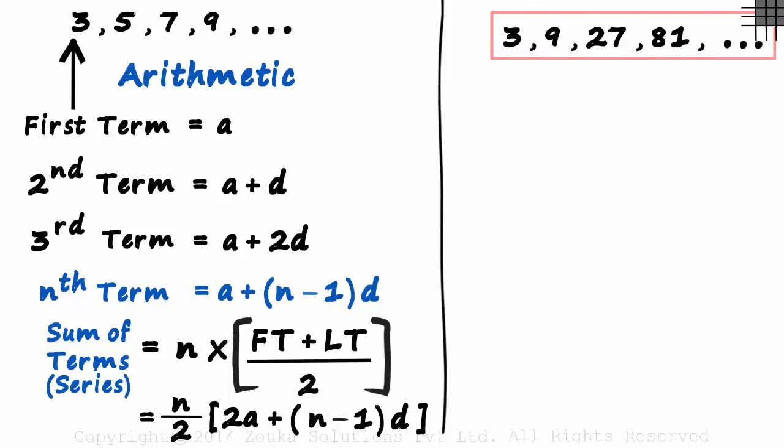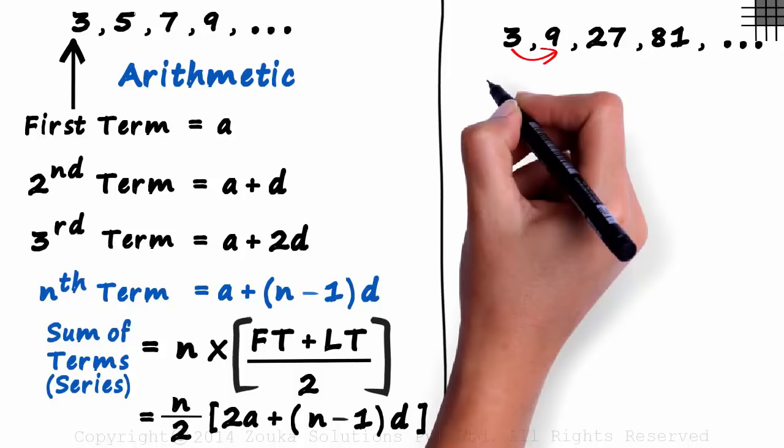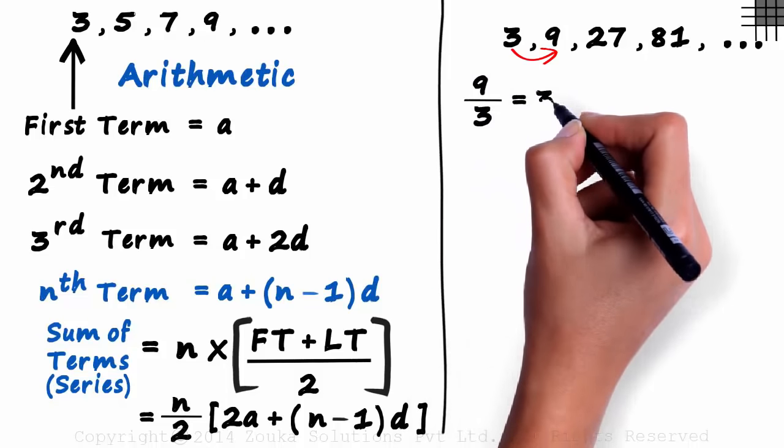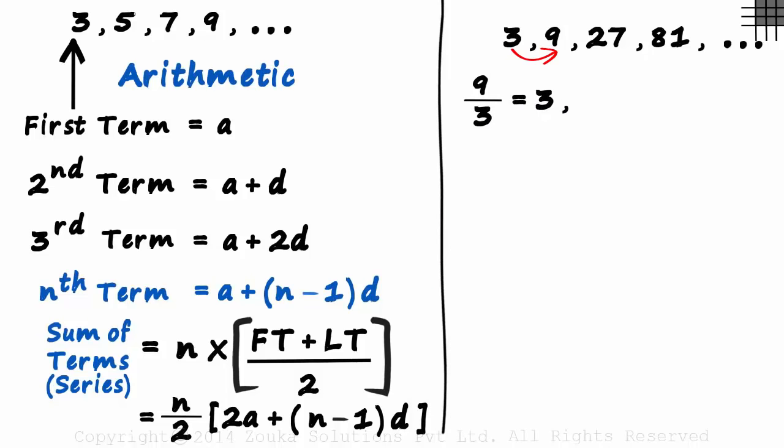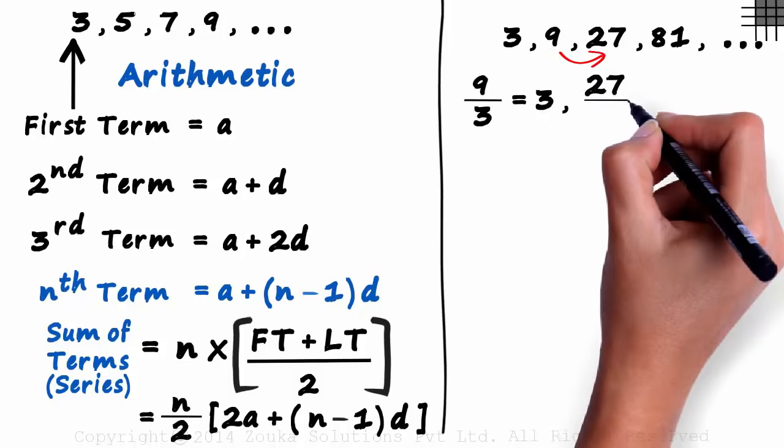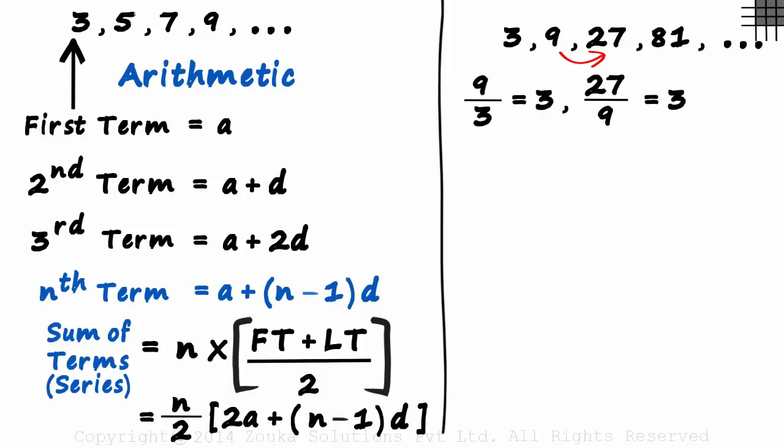Look at the ratio of two consecutive terms. The ratio 9 over 3 is equal to 3, and the ratio of 27 to 9 is also 3. Just like the common difference in arithmetic, we have a common ratio here.